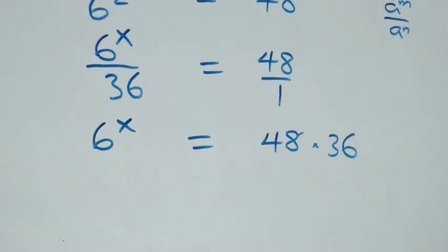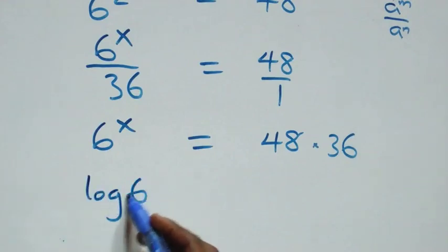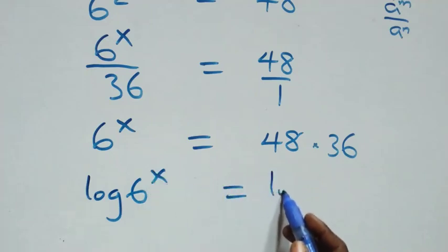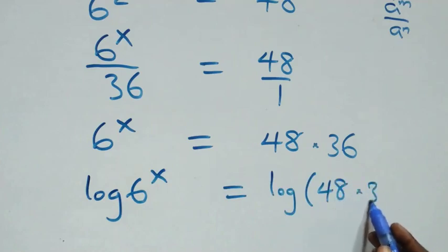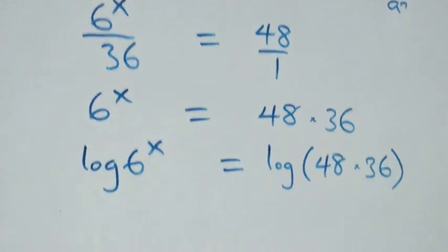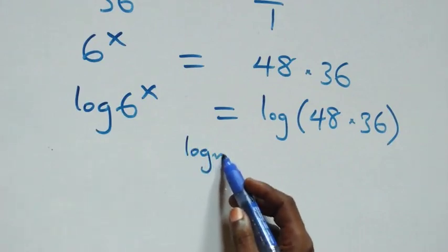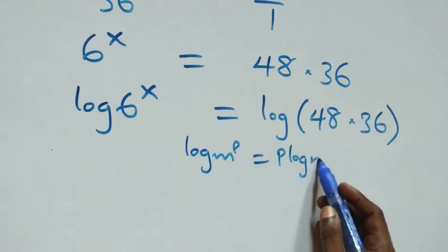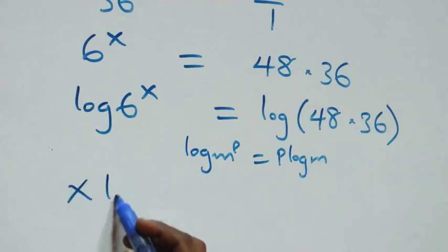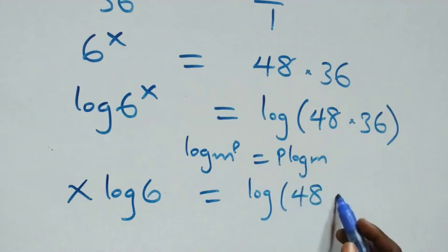The next step: we take the log on both sides. That is, log of six raised to power x equals log of forty-eight times thirty-six. We apply the power rule of logarithms, where log of m raised to power p is the same as p log m. So we have x log six equals log of forty-eight times thirty-six.